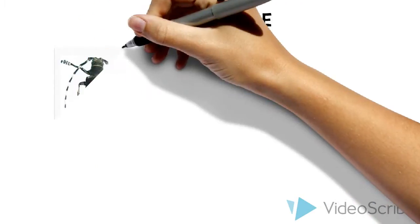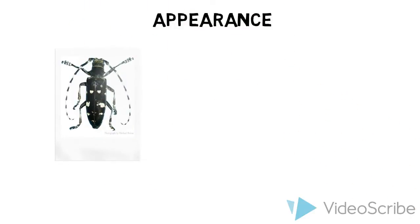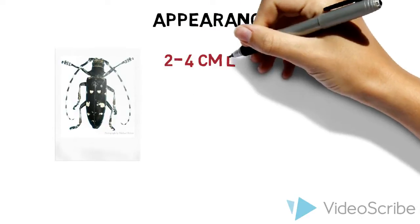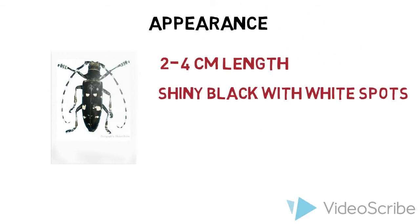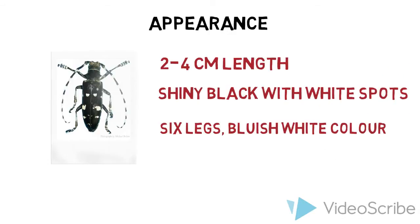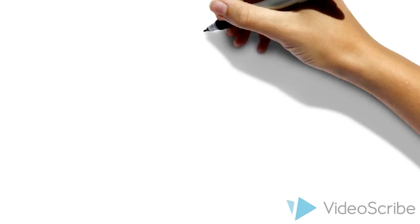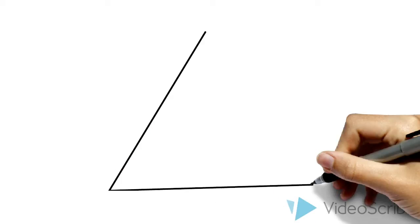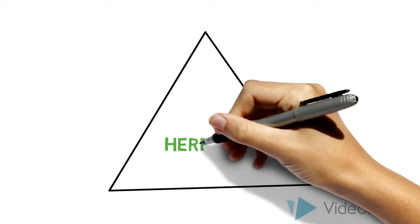In terms of its physical appearance, an adult Asian longhorned beetle is 2-4 cm in length. It is shiny black with prominent irregular white spots and has six legs that are a distinct bluish white colour. It also has long black and white banded antennae that are 1-2 times its body length. Because a beetle has a diet consisting of what is essentially tree bark, it is a herbivore.